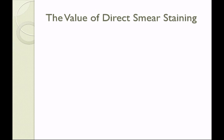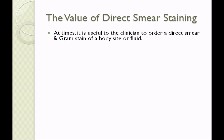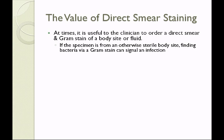There is great value in performing a direct smear — a specimen from a wound or sputum culture that is immediately Gram stained to determine if an infectious microorganism is present. If the specimen is from a sterile body site, finding bacteria signals infection, and results can be returned to the clinician quickly. For example, spinal fluid is always Gram stained when meningitis is suspected. Joint fluids, bronchial washings, and catheter urine can also be directly Gram stained for valuable diagnostic information.